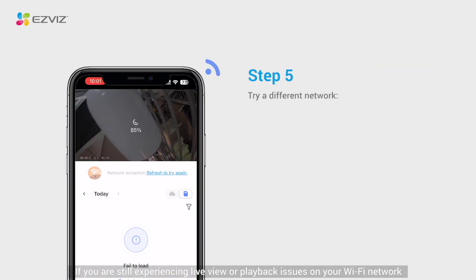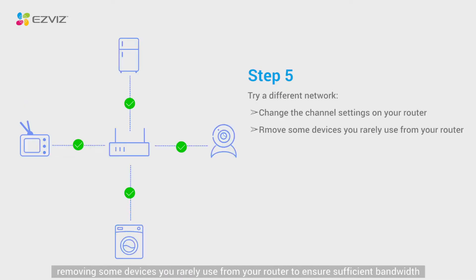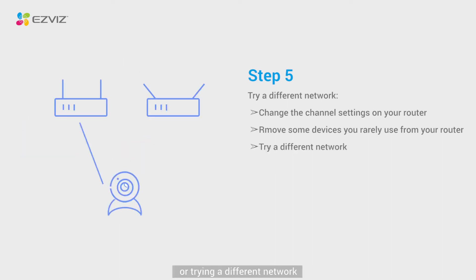If you are still experiencing live view or playback issues on your Wi-Fi network, you can also try changing the channel settings on your router, removing some devices you rarely use from your router to ensure sufficient bandwidth, or trying a different network.